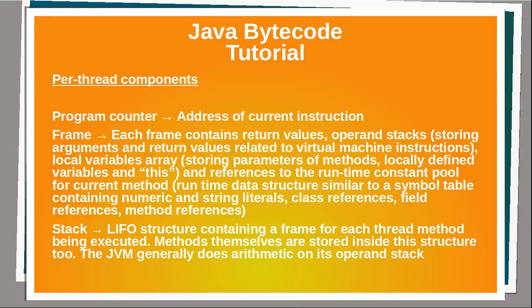Frame. Each frame contains return values, operand stacks storing arguments and return values related to virtual machine instructions, a local variables array storing parameters of methods, locally defined variables and the object 'this', and references to the runtime constant pool for the current method. The runtime constant pool is similar to a simple table containing numeric and string literals, class references, field references, and method references.